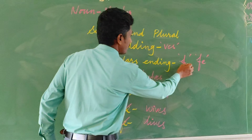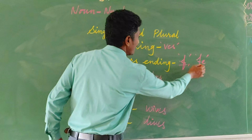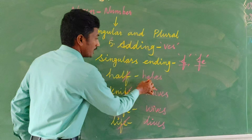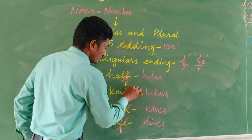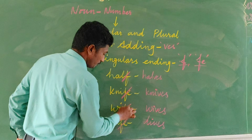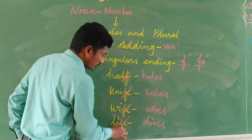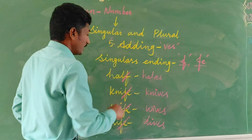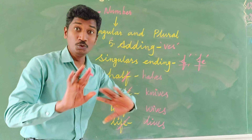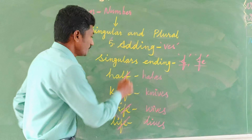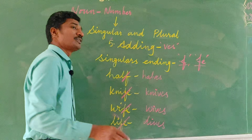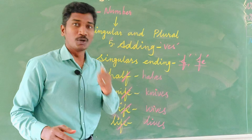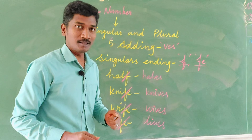This is the spelling rule — we will not make mistakes if we are very clear. It is removing 'f' or 'fe' and adding 'ves'. While changing, we remove 'f', we remove 'fe'. Do not just add 'ves' to half — no. We remove that 'f' and add 'ves' to make plural.